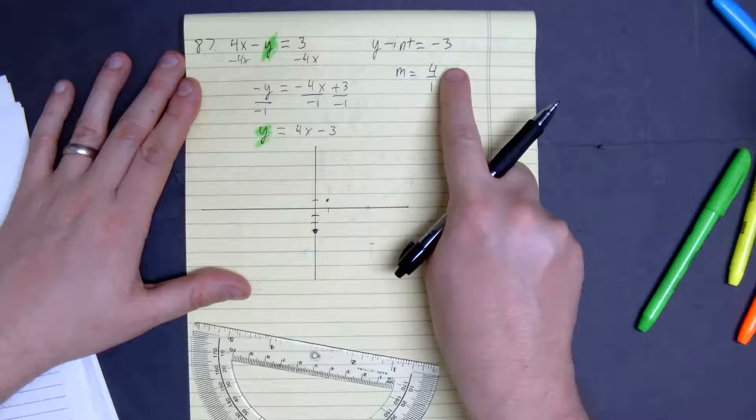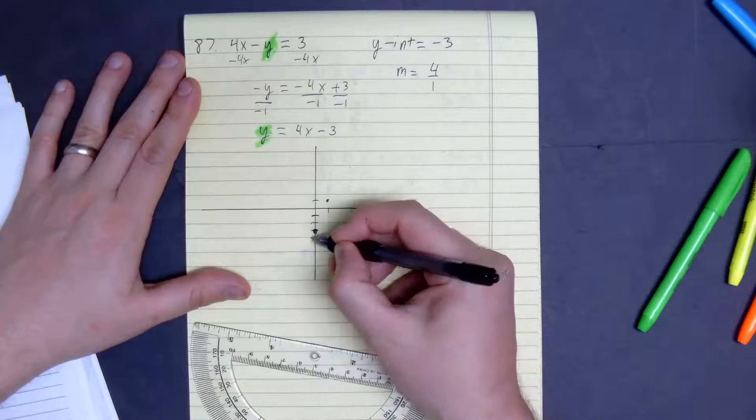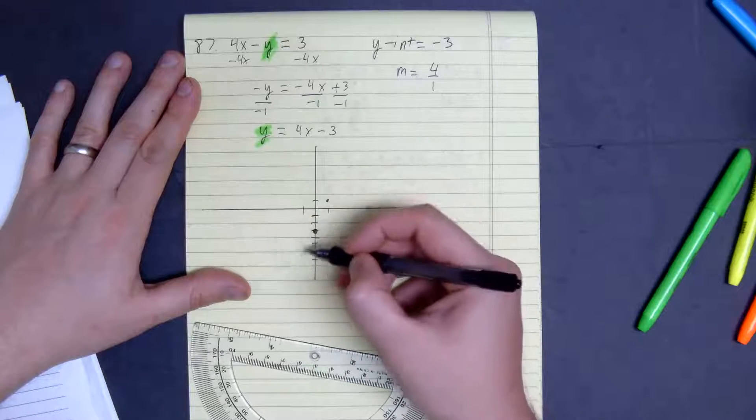And if we want to go reverse, you go down 4, left 1. 1, 2, 3, 4 over 1.